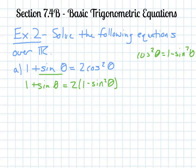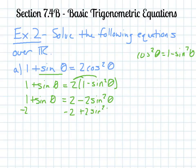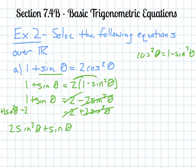Now my equation is all in terms of sine. Think of it like having x instead: 1 plus x equals 2 times (1 minus x²). You want to get everything on the same side so you can factor. So first I distribute to get 2 minus 2sin²θ, then subtract 2 from both sides and add 2sin²θ to both sides. That gives me 2sin²θ plus sinθ minus 1 equals 0.